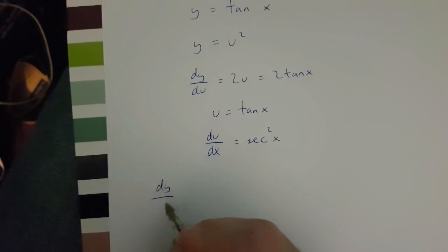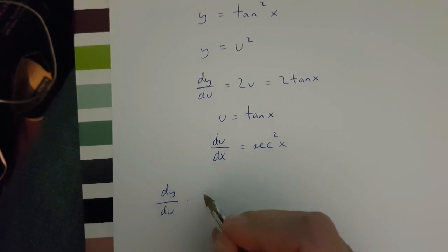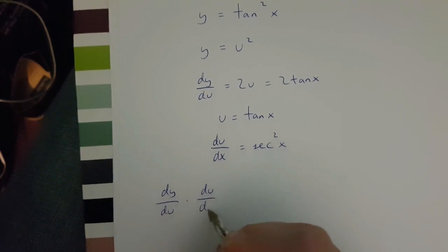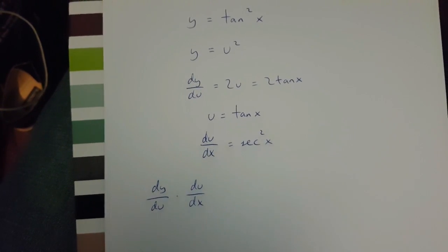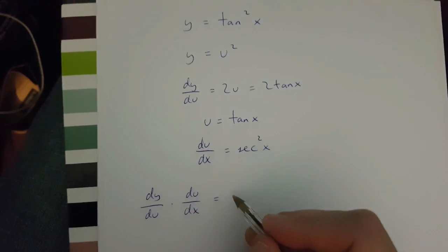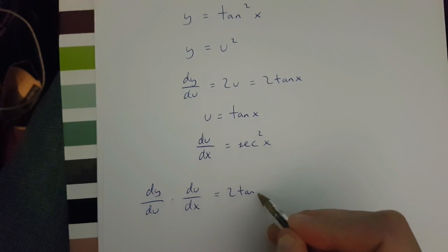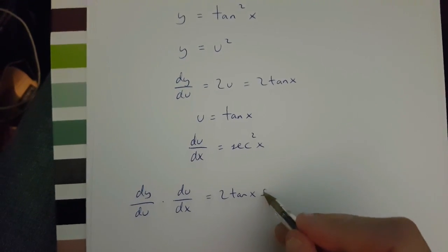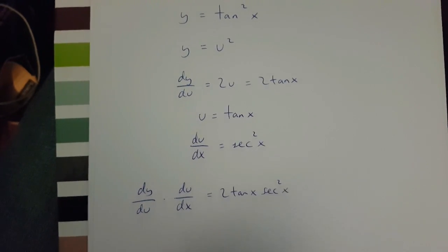dy over du times du over dx is dy over dx. And this is equal to 2 tan x times sec x squared.